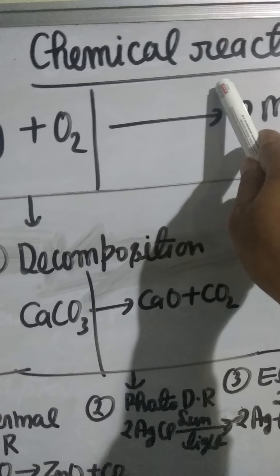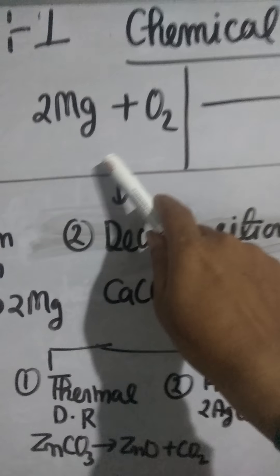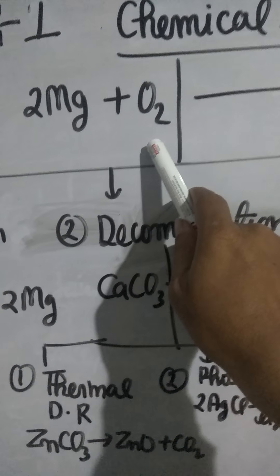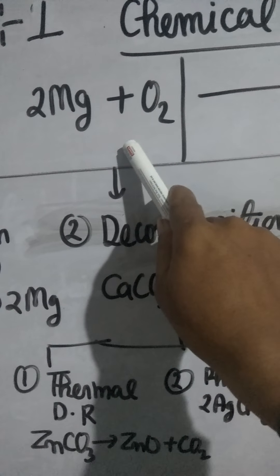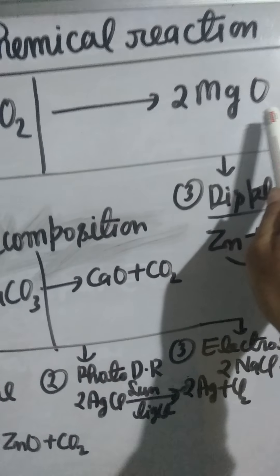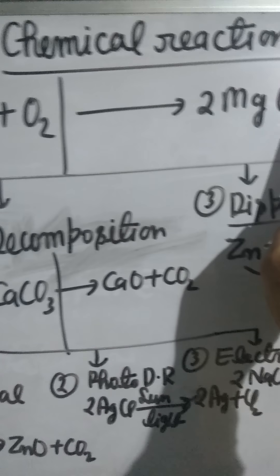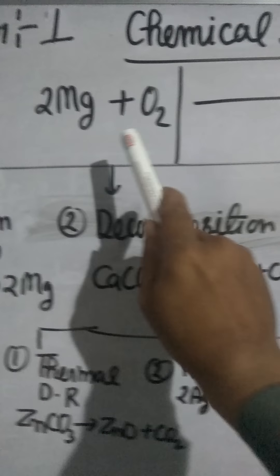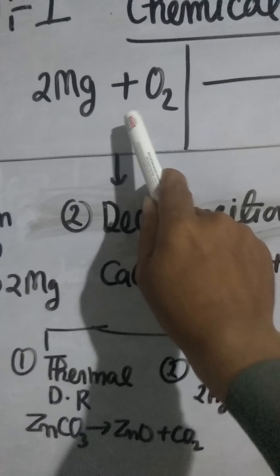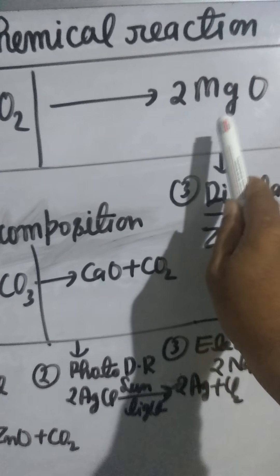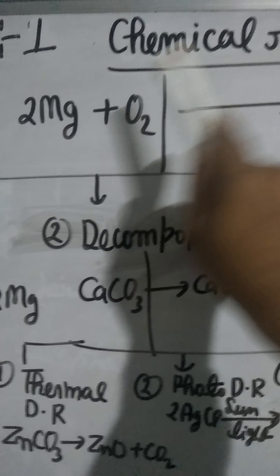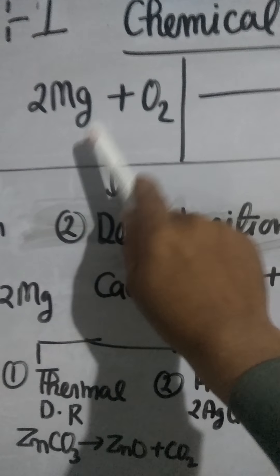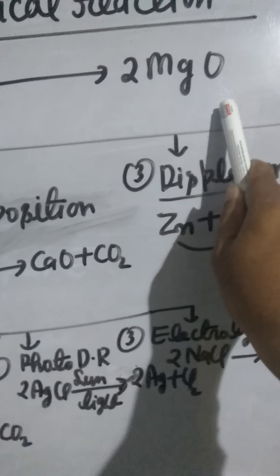What is chemical reaction? A process in which two or more substances combine to form a new substance with new properties is called a chemical reaction. For example, magnesium burns in air to form magnesium oxide.